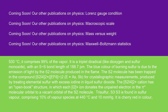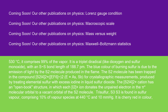Trisulfur (S3) is found in sulfur vapor, comprising 10% of vapor species at 440°C and 10 mmHg. It is cherry red in color, with a bent structure similar to ozone (O3). Tetrasulfur (S4) has been detected in the vapor phase, but has not been well characterized. Diverse structures — chains, branched chains, and rings — have been proposed.